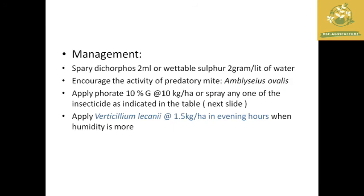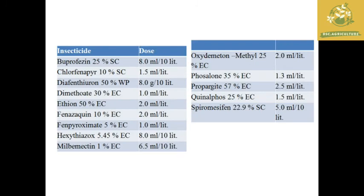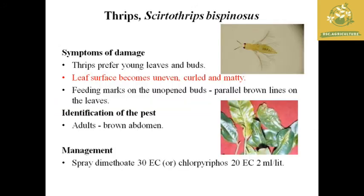The management of mites: the effective chemical method is spraying of dicofol at 2 ml or wettable sulfur at 2 g per liter of water. We can also increase the activity of predatory mites (scientific name: Amblyseius ovalis), which are effective against these mites. Applying Beauveria bassiana at 10 kg per hectare and spraying one of the effective insecticides at the recommended dosage are also effective. Beauveria bassiana can be applied in the evening hours when humidity is high.